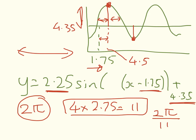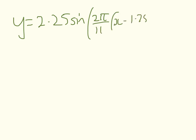We've got a much more stretched out graph here because instead of one cycle being 2 pi long, which is about 6.28 something, ours is 11. So our cycle needs to be scaled like this, 2 pi over 11. That's the last piece of the puzzle, so we can pop that into our equation. So we get y equals 2.25 sine 2 pi on 11, x minus 1.75 plus 4.35.